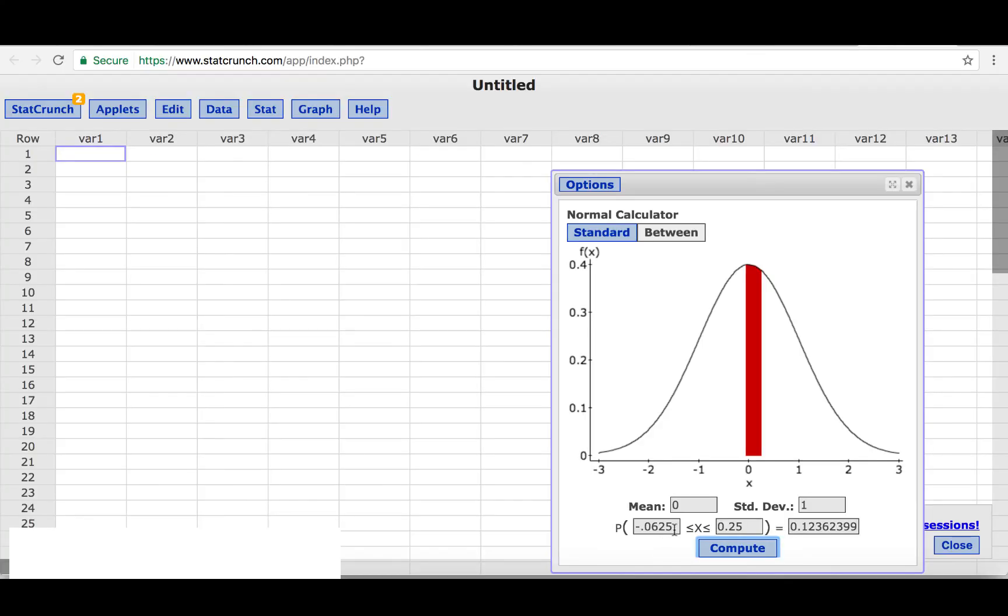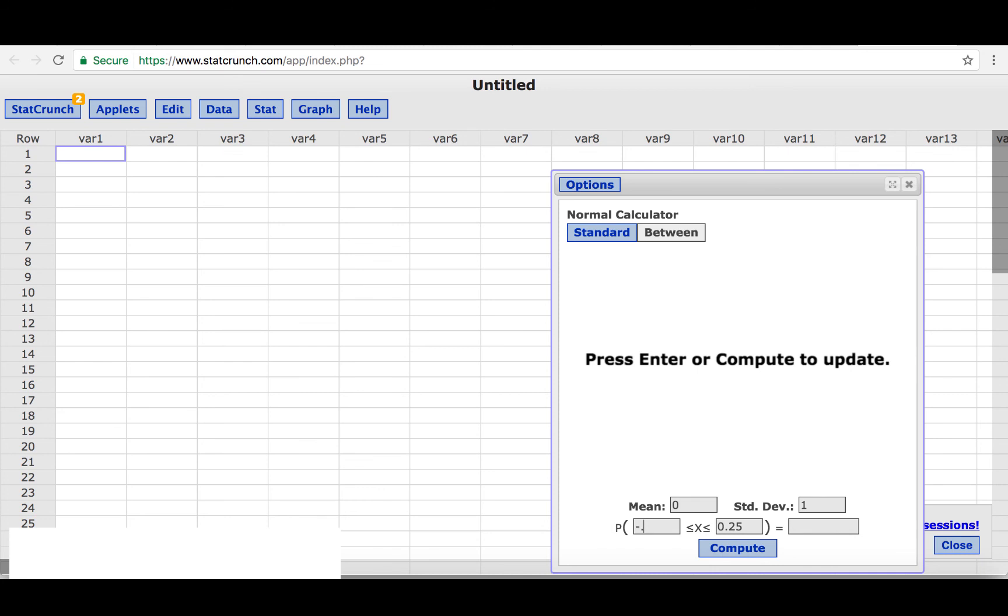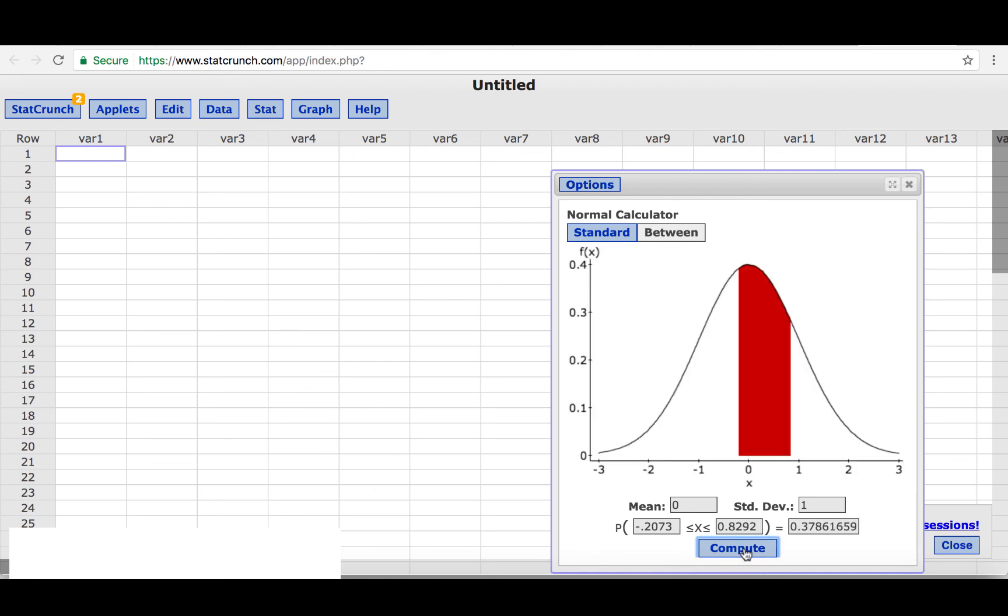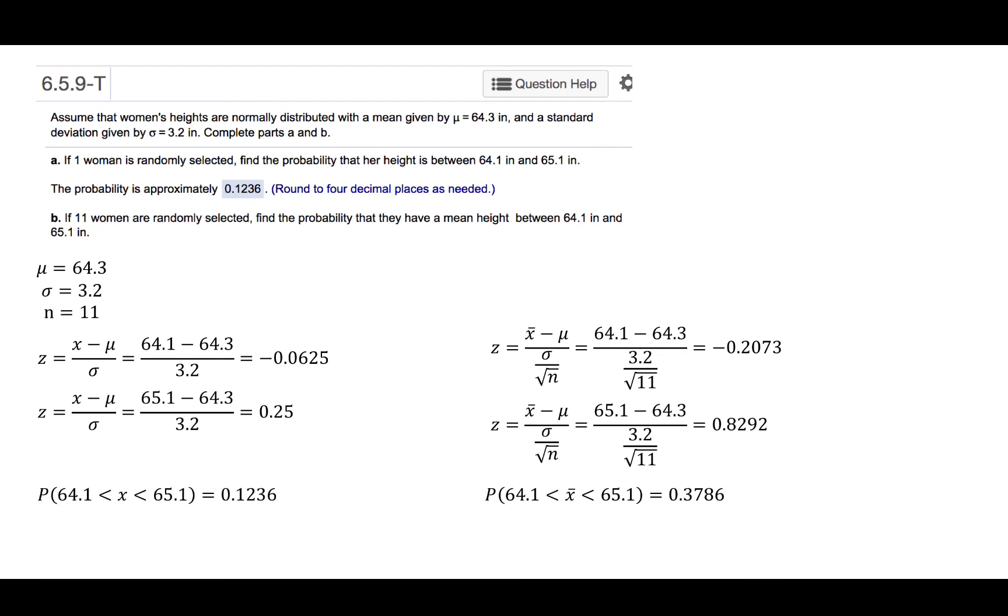Now, returning to the normal distribution calculator in StatCrunch, we'll change these limits to minus 0.2073 and 0.8292, hit compute, and this gives us a probability of 0.3786 when we round to four decimal places. So the probability that the sample mean would be between 64.1 and 65.1 for a sample size of 11 would be 0.3786.